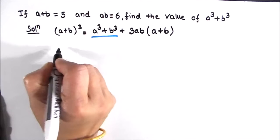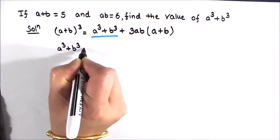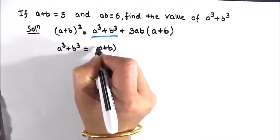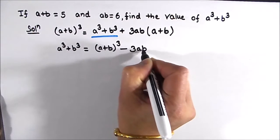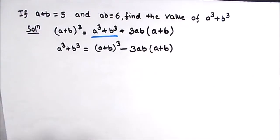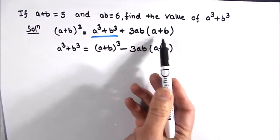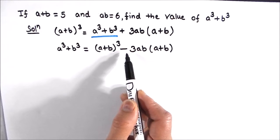So this will become a cube plus b cube equals a plus b whole cube minus 3 times ab times a plus b. This 3ab times a plus b will be shifted to the other side and the sign will be changed.